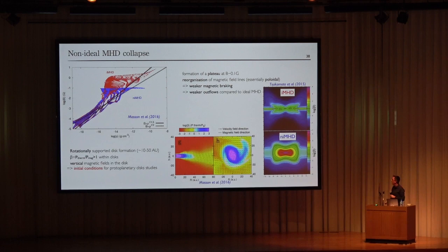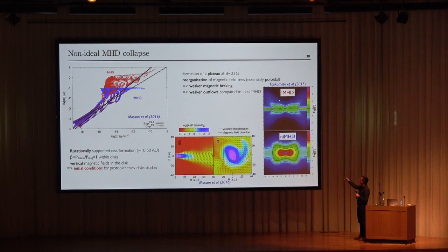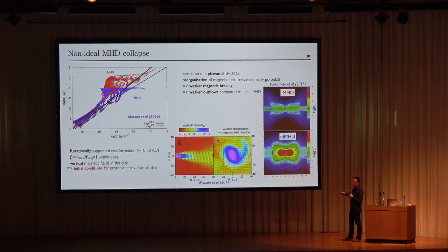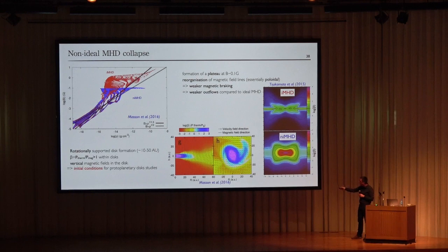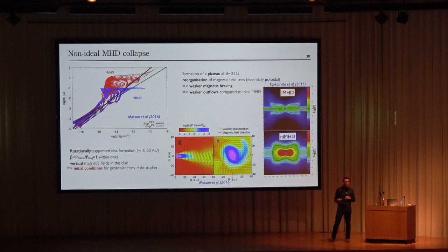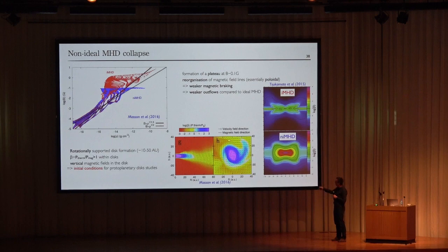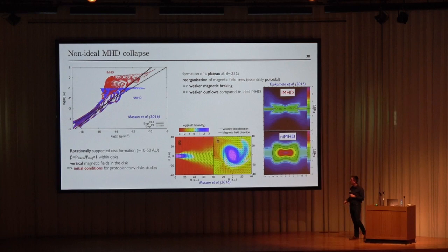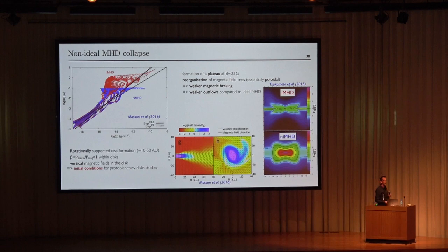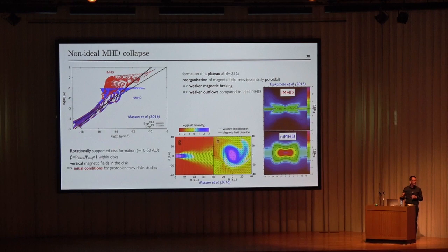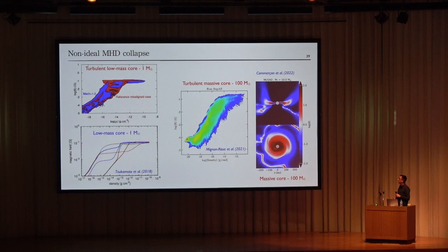Looking at properties of these disks, in examples from Masson et al. and Tsukamoto et al. accounting for Ohmic and ambipolar diffusion, the color coding shows plasma beta — the ratio of thermal to magnetic pressure. The disk region with non-ideal MHD corresponds to where beta is greater than one, meaning disks forming with non-ideal MHD are hydro-dominated — completely different from ideal MHD disks dominated by magnetic pressure. These disks are relatively compact, between 10 and 50 AU, compatible with observations. The magnetic field orientation is initially vertical, providing initial conditions for protoplanetary disk studies — plasma beta and magnetic field orientations.